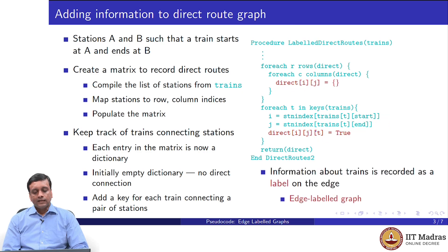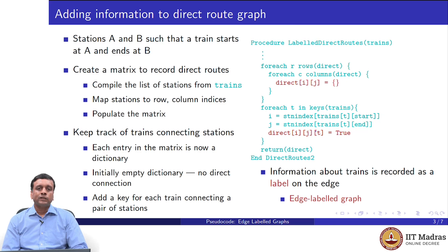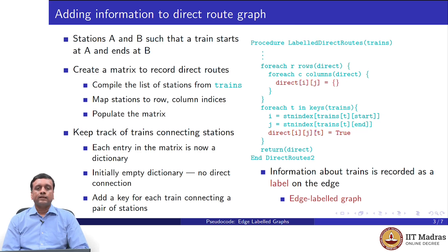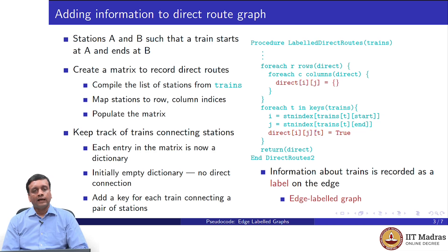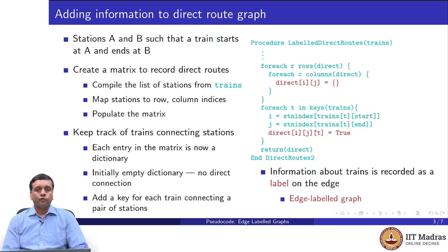This is what we call an edge labeled graph. We have taken the edges between cities and put information on each edge, giving us more than just the fact that there is a route. In this case, we record all the trains that create this route — there could be one or many. If there is no train, we have an empty dictionary. This notion of an edge labeled graph is very useful and is very often used in conjunction with graphs to do computations.